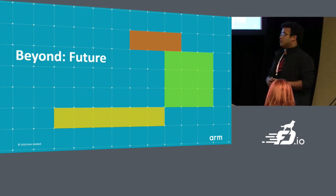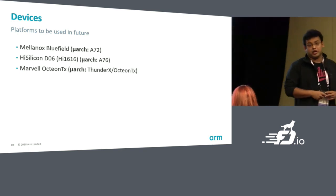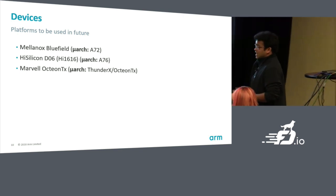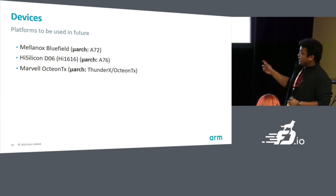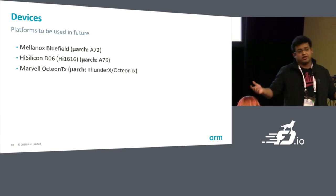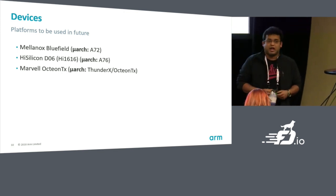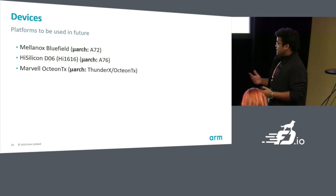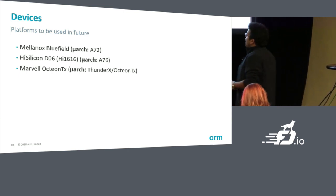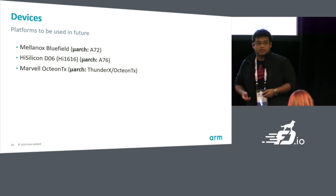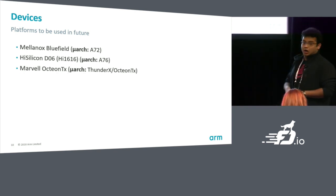What does the future look like? First, the devices we plan to look into: one is the Mellanox Bluefield, already a SmartNIC chip based on A72 — there's also a reference board with a lot more cores to play around with. Then there's the HiSilicon D06, expected next year, which is an A76 core. And then there's Marvel Octeon TX. These are some of the platforms we plan to test and optimize in future.